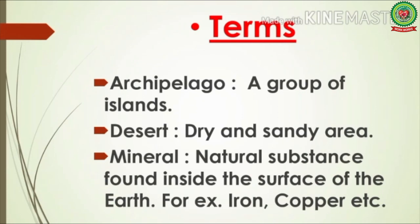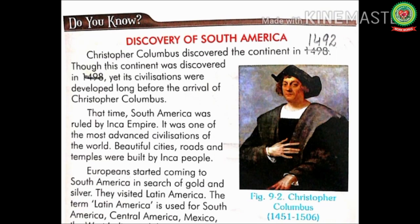Now students, let's discuss the important terms we are going to use in this topic. Number one: archipelago means a group of islands. Number two: desert means a dry and sandy area. Number three: mineral means a natural substance found inside the surface of the earth, for example iron, copper, etc. Now students, open page number 93 of your book.